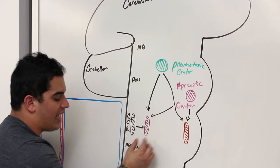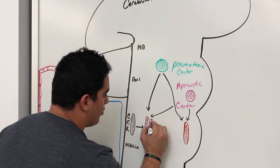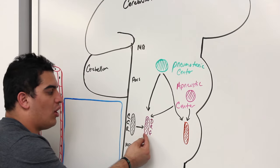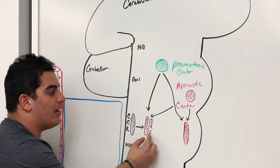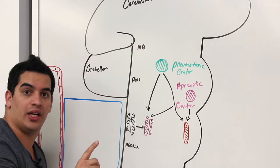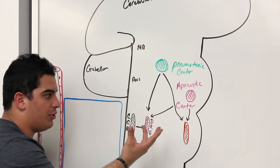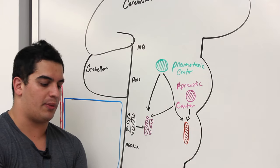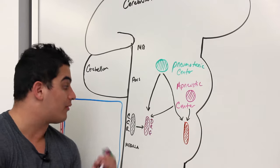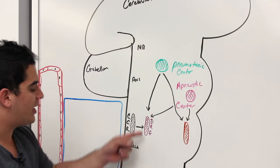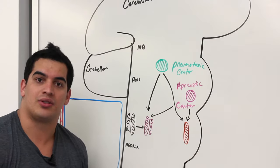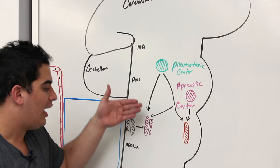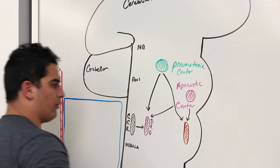The dorsal respiratory group (DRG) is actually very close and intimate with what's called the nucleus tractus solitarius, which is one of the main nuclei of the DRG. The DRG has two functions: it can receive stretch receptor signals, proprioreceptor signals, juxtacapillary receptor signals, and chemoreceptor signals — both central and peripheral. It can also send signals down to trigger inspiration via the external intercostals and the diaphragm.